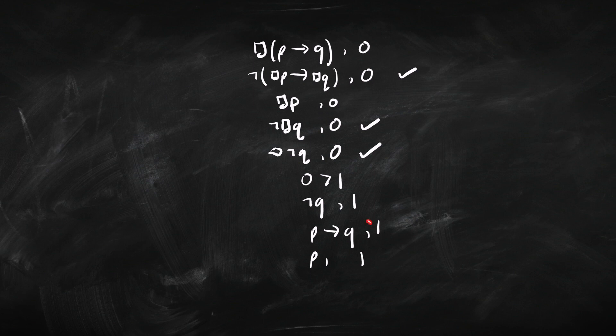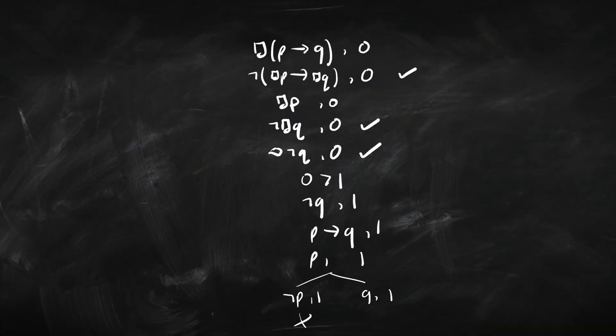As it happens, I'm not going to add any more worlds here because this tree is going to close in a minute. What have we got here? We've got an if-then at world one, so that branches. We're going to get not P world one on the left and Q one on the right. Here we've got not P, and here we've got P at the same world, both tagged with a one, so we can close that. And here we've got Q at world one, and there we've got not Q at world one, so again we can close that one. That tree closes. We're done.